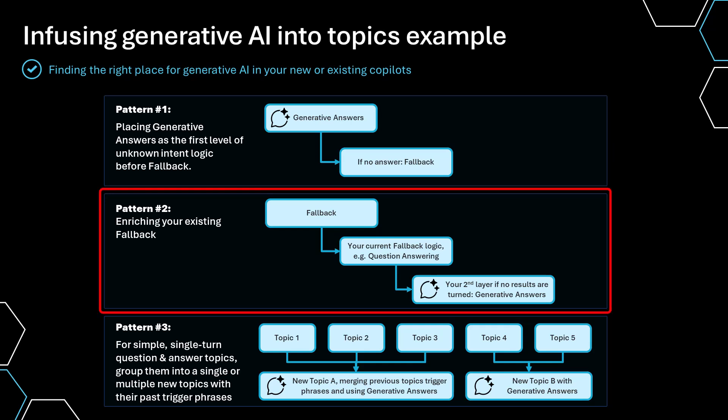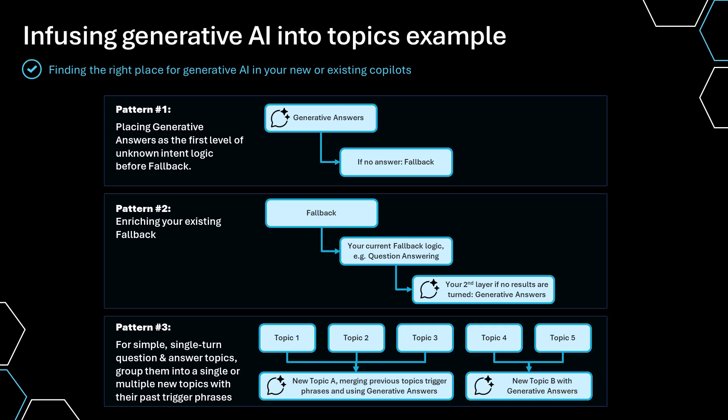Pattern two is where you enrich the flow. You might go through fallback and say: maybe I went through generative AI but didn't get the answer, or I want to also check an existing Q&A Maker or a CQA-type implementation. There is a service in Azure that can do this — you can wire in your own custom question-and-answer pairs in front of the generative answers component. That would be configured by going into your conversational boosting topic and adding the additional logic to check that before checking the generative AI configuration, and then moving into fallback.